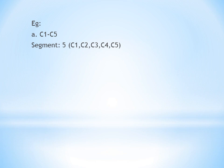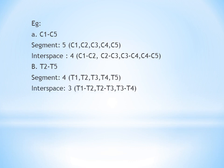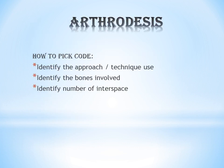The interspaces for C1–C5 are C1–C2, C2–C3, C3–C4, C4–C5 — four interspaces. For T2 to T5, the segments are T2, T3, T4, T5 — four segments — and the interspaces are T2–T3, T3–T4 — three interspaces. For L5 to S1, there are two segments (L5 and S1) and one interspace (L5–S1).